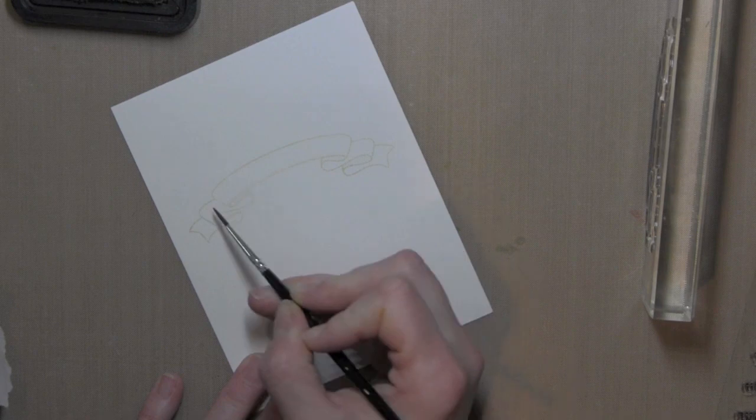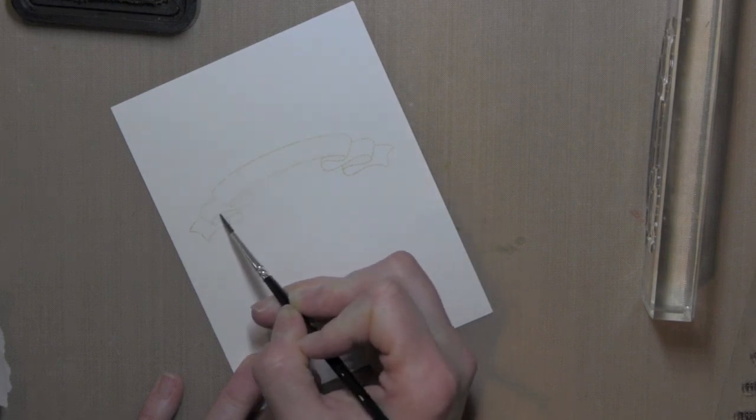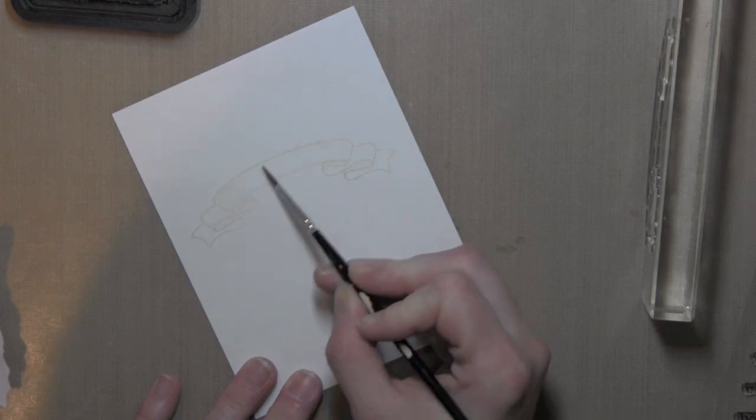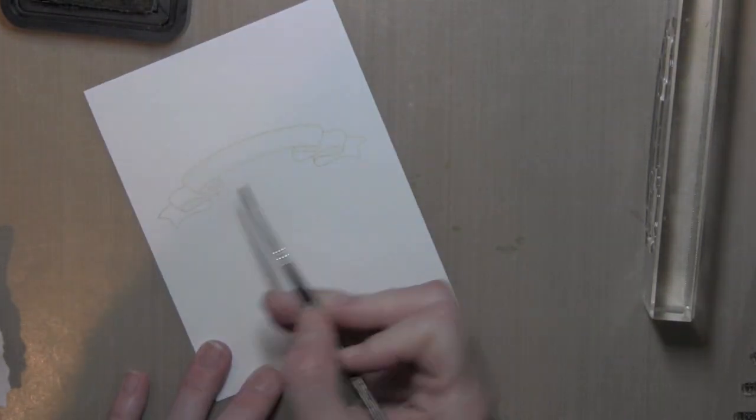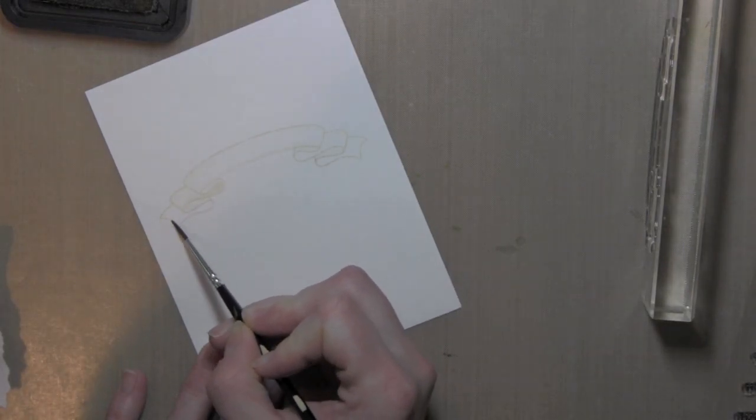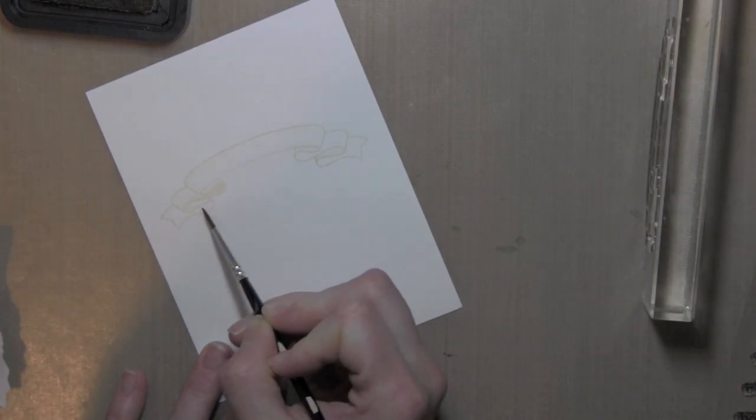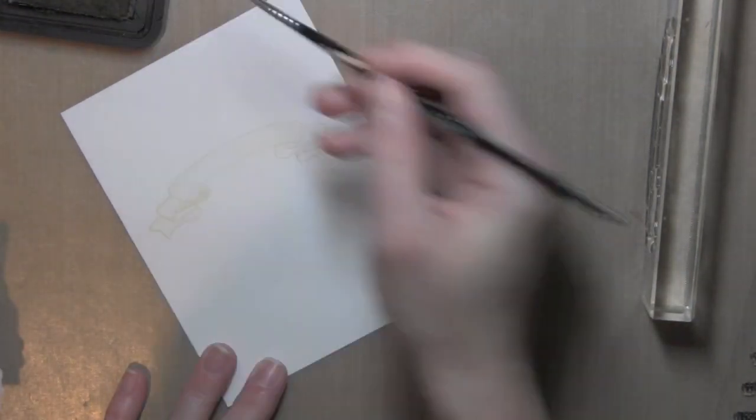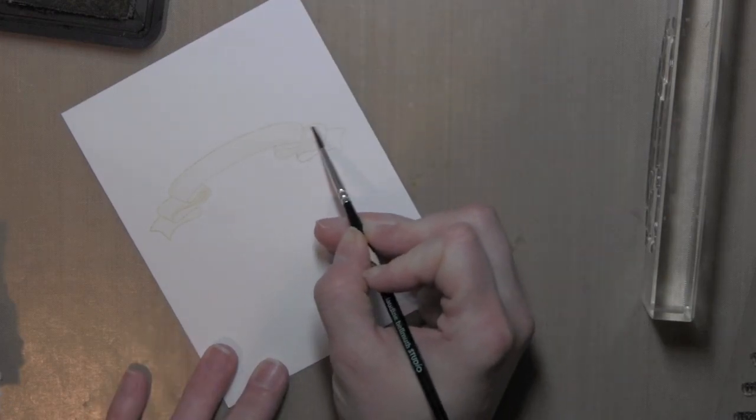I stamped the banner on some Tim Holtz watercolor paper using the Antique Linen Distress Ink. I wanted the outline to be pretty faint and then I'm using a fine tip paint brush that's barely damp. I don't want it dripping wet because I didn't want too much distressing with the water coloring.